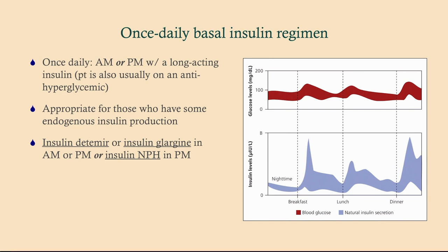For the once-daily regimen, we just give a long-acting insulin in the morning or in the evening. Detemir or glargine can be given either in the morning or in the evening. If you go for NPH, you have to give it in the evening. NPH is commonly given because it's cheaper — regular insulin and NPH are both cheaper; you can get them for like $25 at Walmart. So this is what we go for first, ideally in type two diabetics who need insulin.